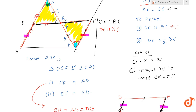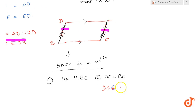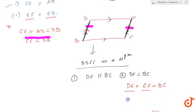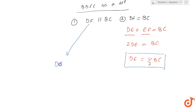For the second part, note that DF can be written as DE plus EF. So, DE plus EF is equal to BC. And remember, EF is equal to DE — EF and DE are equal from the congruent triangles. So I can write it as twice DE is equal to BC. By simple cross multiplication, DE must be equal to half of BC. So DE is parallel to BC — that's the first part — and DE is equal to half of BC — that's the second part of the midpoint theorem.